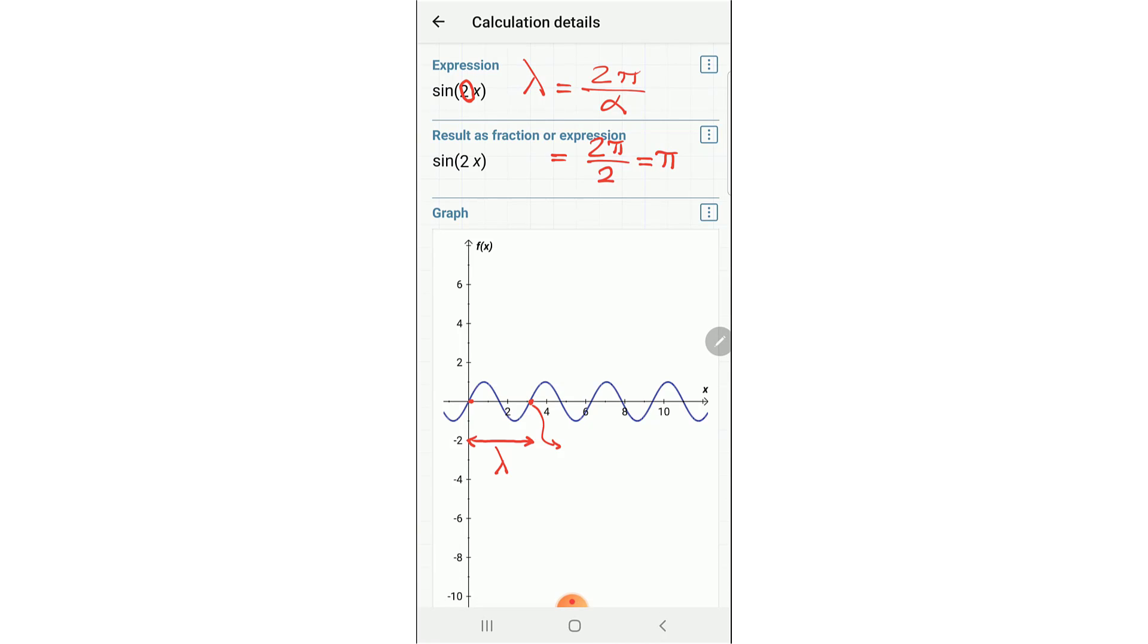So as you can see here is 3.14 almost in the graph. So it is seen that the wavelength is equal to pi. So since we increase the coefficient here, the wavelength decreases.